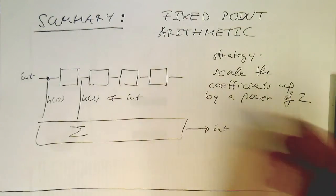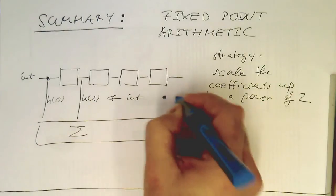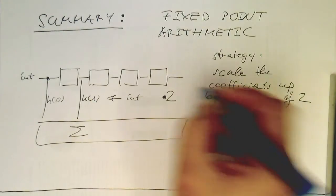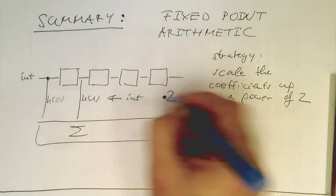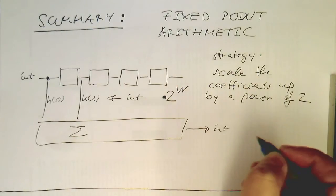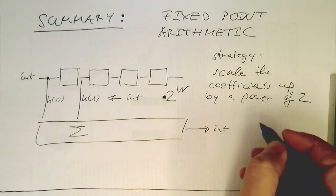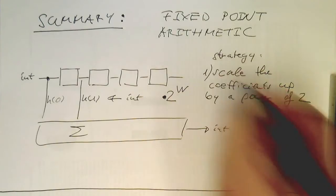We just multiply these coefficients by 2 to the w or so. That's our power of 2. That's the first step.